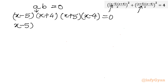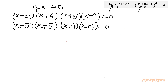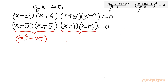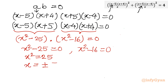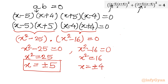Rearranging to apply the difference of two squares: (x minus 5)(x plus 5) times (x minus 4)(x plus 4) equals 0, giving (x squared minus 25)(x squared minus 16) equals 0. Setting each factor to zero: x squared minus 25 equals 0 gives x equals plus or minus 5, and x squared minus 16 equals 0 gives x equals plus or minus 4. Four real solutions.